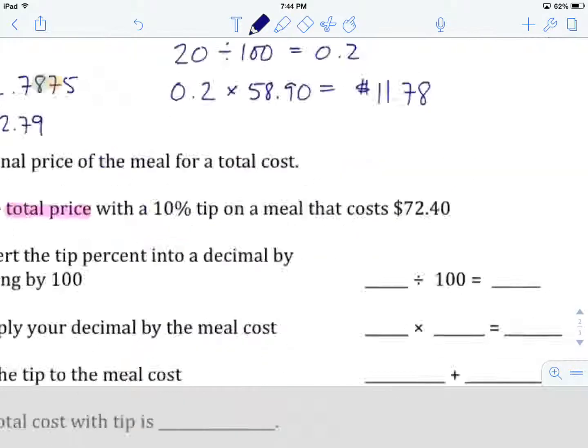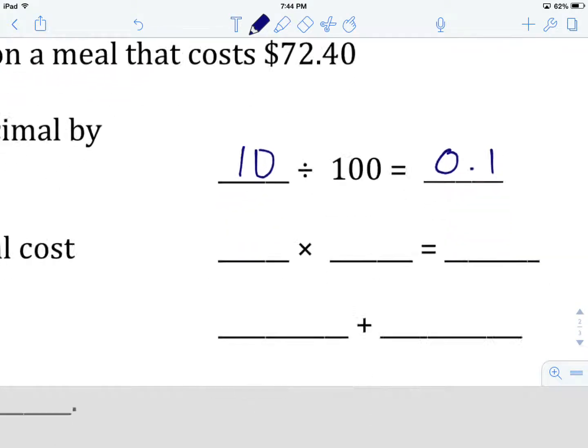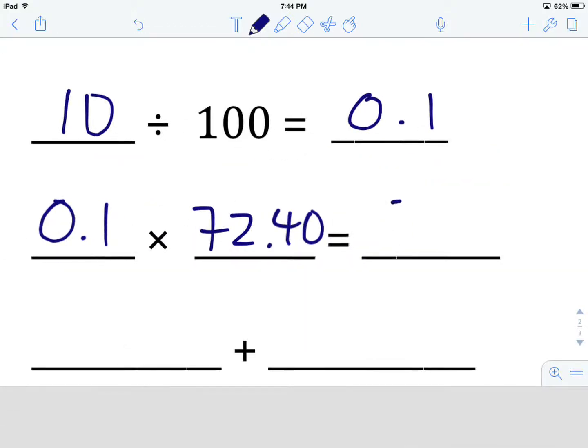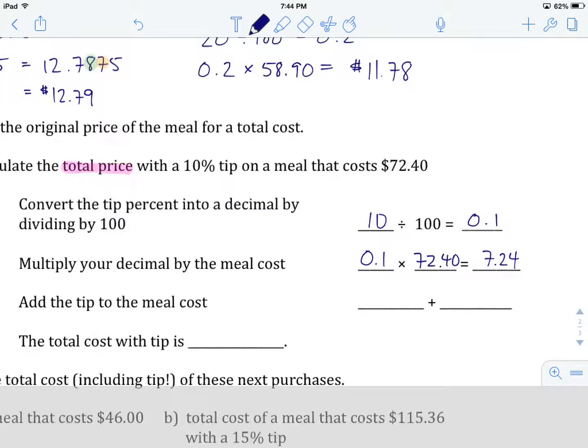Starting with the same step. Taking our percentage, which is 10, dividing it by 100 to get 0.1 when we type it into our calculator. We take our new decimal and multiply it by the cost of the meal, which is $72.40. 0.1 times $72.40 gives us $7.24. That's the right number of decimal places, so we're good.